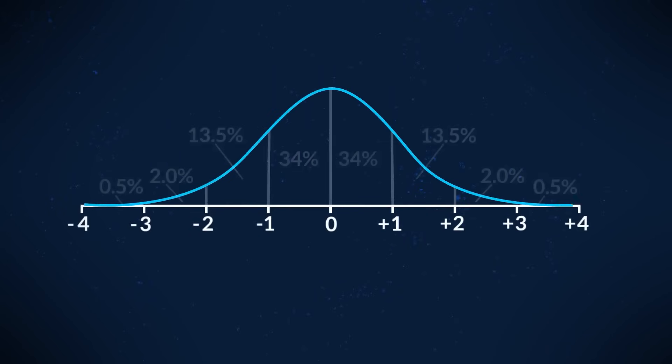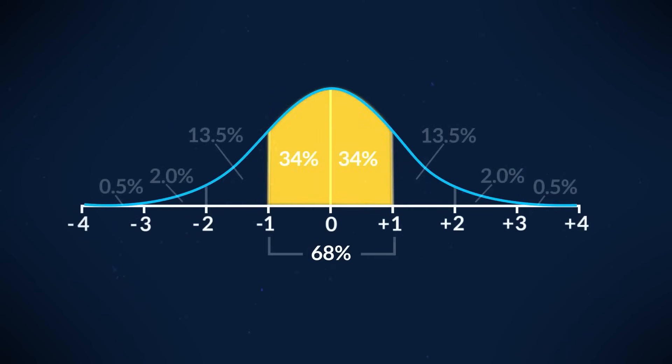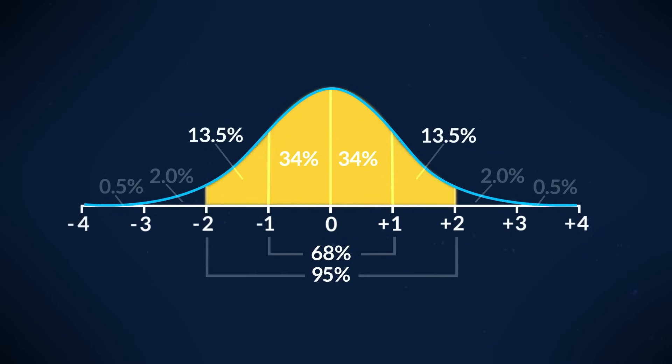Now, while you might not have to calculate the standard deviation, you do need to be able to understand what it means and be able to analyze different distributions and data. In a normal distribution, on average, 68% of scores will fall within one standard deviation of the mean in each direction. 95% of scores will fall within two standard deviations of the mean in each direction, and 99% of scores will fall within three standard deviations of the mean in each direction.